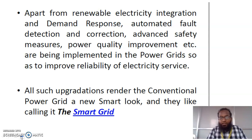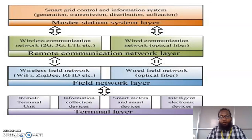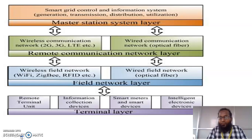The smart grid control and information system consists of three types of layers. The power production and controlling is a very essential part of smart grid. It consists of three types of layers: the first one is the master station system layer, the second one is the remote communication network layer, the third one is the field network layer, and finally the base layer is the terminal layer.